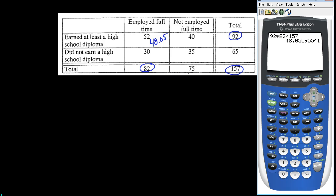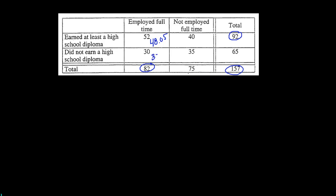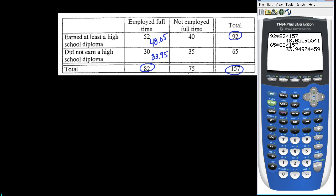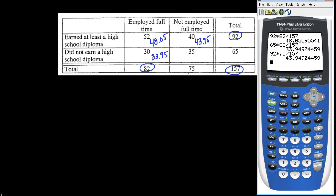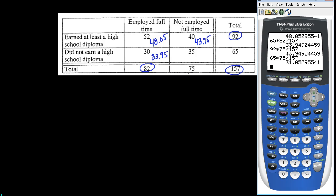For employed full-time without a diploma: row total 65 times column total 82, divided by 157, gives 33.95. For not employed full-time with a diploma: row total 92 times column total 75, divided by 157, gives 43.95. And for not employed full-time without a diploma: row total 65 times column total 75, divided by grand total 157, gives 31.05.